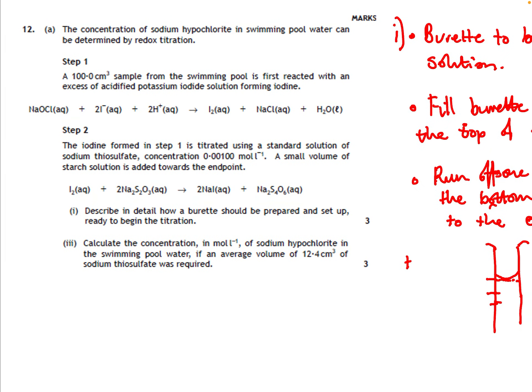Now we're going to work out the concentration of sodium hypochlorite in a swimming pool. The question says take a 100 cm³ sample. You react the sodium hypochlorite with excess iodide ions, which produces iodine. The reason for this is that sodium hypochlorite is colourless — you can't see an end point — but reacting it with potassium iodide produces iodine, which you can then use in the titration with sodium thiosulfate.